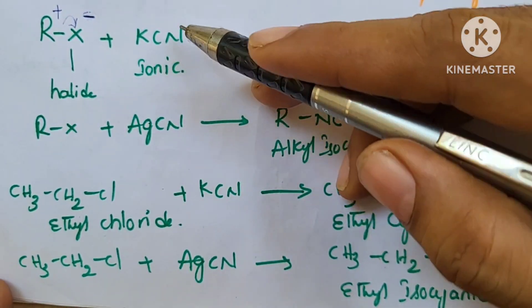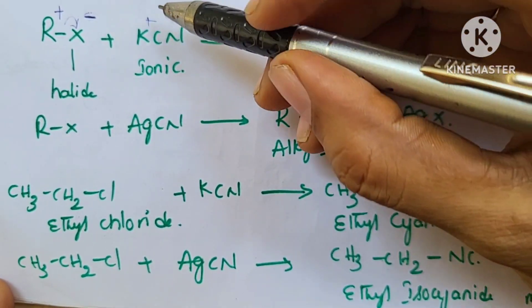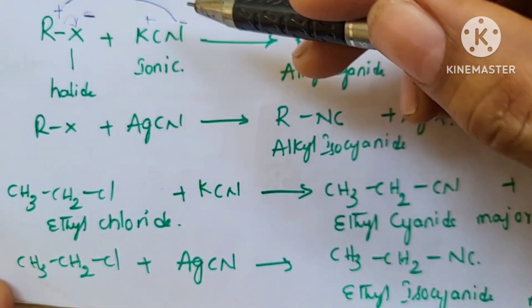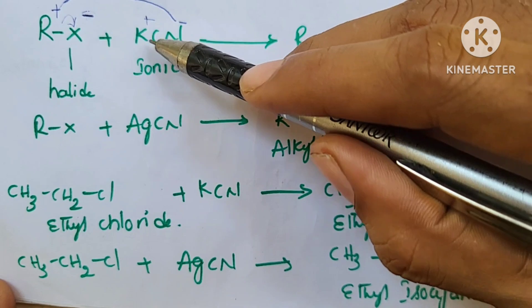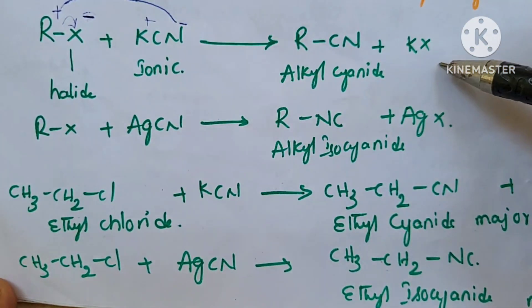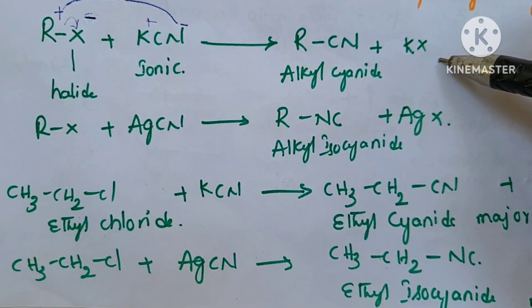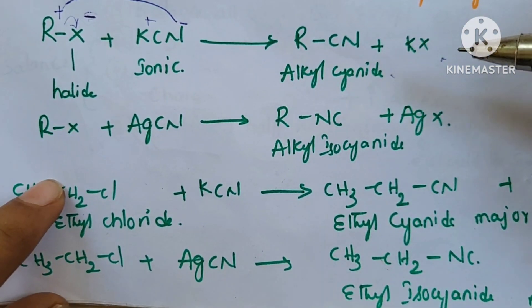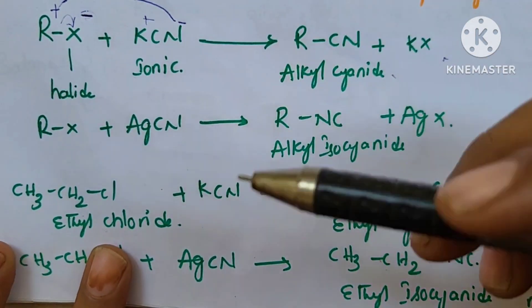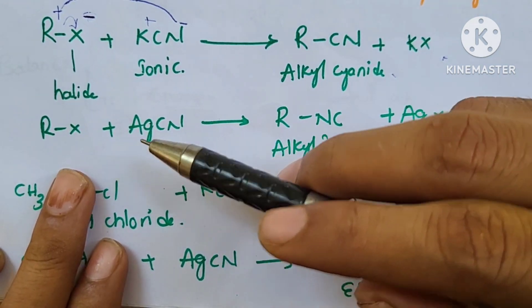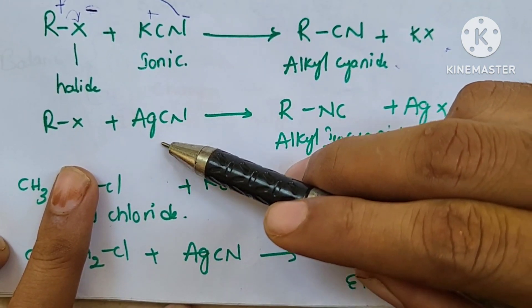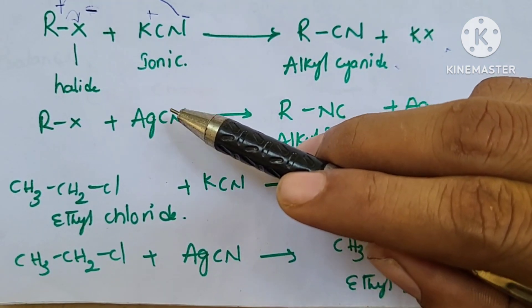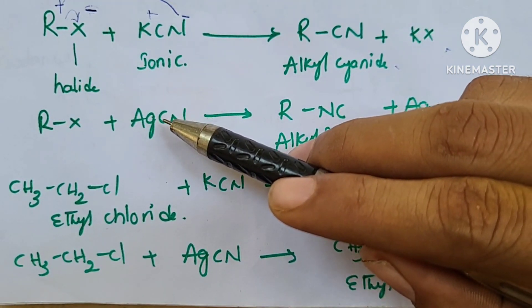When R-X reacts with KCN, which is ionic, we have K+ and CN-. With AgCN, it is covalent.